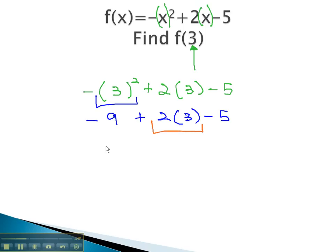Next, we multiply to get negative 9, plus 6, minus 5. And finally, start to add and subtract from left to right to get negative 3, minus 5, which is equal to negative 8.